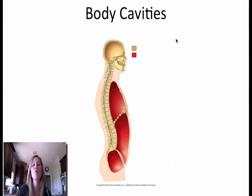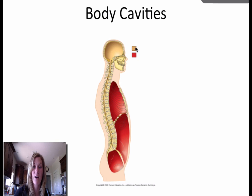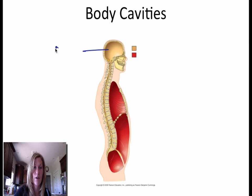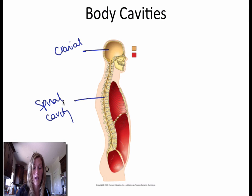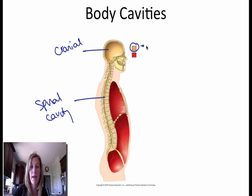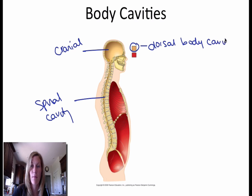The next thing we're moving into are the body cavities. The major body cavities are outlined in a yellowy color and a red color. This is going to make up the cranial cavity, and down here we're going to have the spinal cavity. Collectively, the cranial and the spinal cavity make up the dorsal body cavity. Dorsal means towards the back.